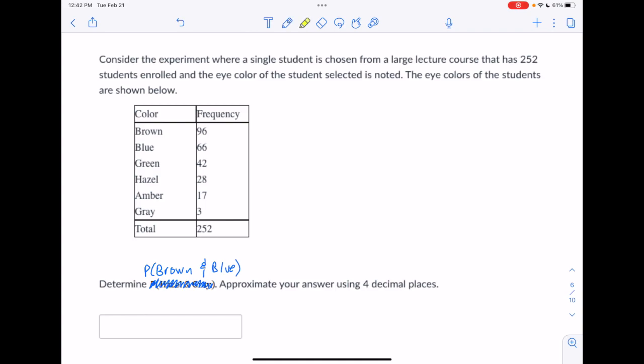So the real key to this question is that it says we're doing an experiment where a single student is chosen. So we're not choosing two people. So we can't get one person who has brown eyes and another person who has blue eyes. We're just choosing one. And there were 252 students in this class. We have 252 students in the chart, and none of them are listed as having brown and blue eyes. There's 96 students who have brown eyes, but those students don't have blue eyes. And there are 66 students who have blue eyes, but those students don't have brown eyes.